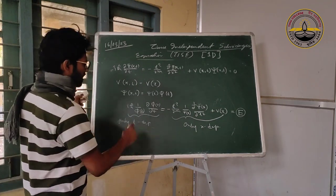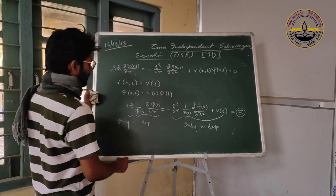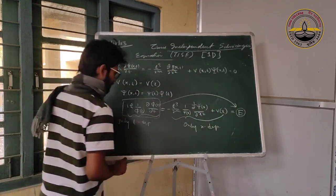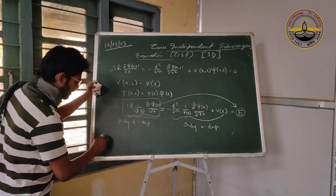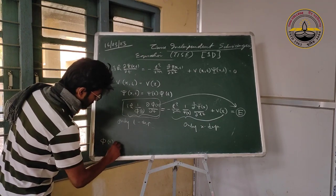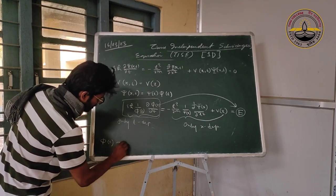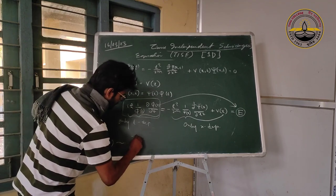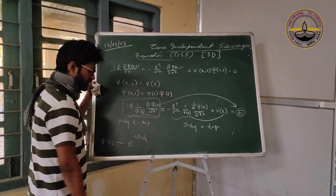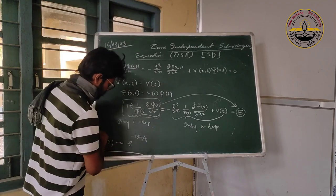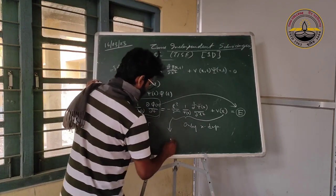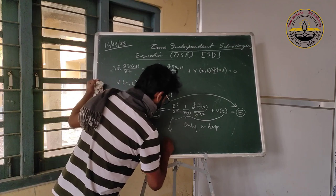So this piece becomes equal to E, and we can find the solution for the time part to be e^(−iEt/ħ). We are then left with only the x-dependent piece of the equation.